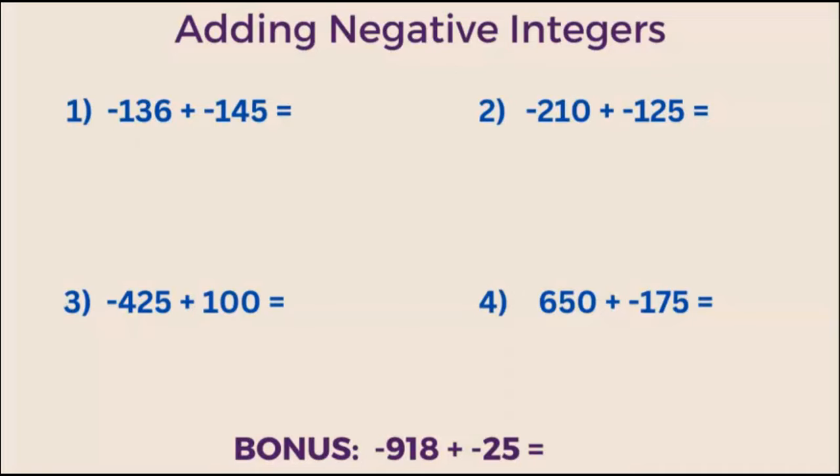Example 1. What is negative 136 plus negative 145? Let's set the problem up as if it was positive integers. So we can take 136 plus 145. Let's add them as you would normally.